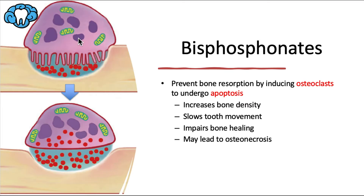Osteoclasts are part of normal bone remodeling along with osteoblasts, which build bone — they just do the opposite. But in some cases, like osteoporosis, these osteoclasts are removing too much bone and make it weak, so we have to stop them, and that's when bisphosphonates can come into play.